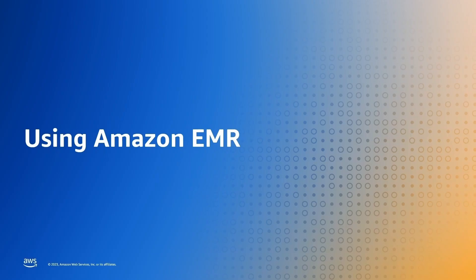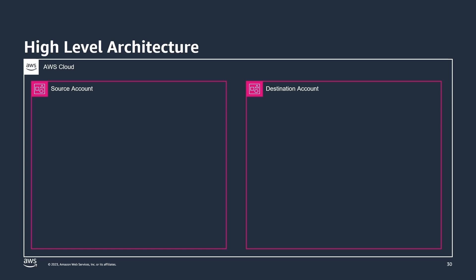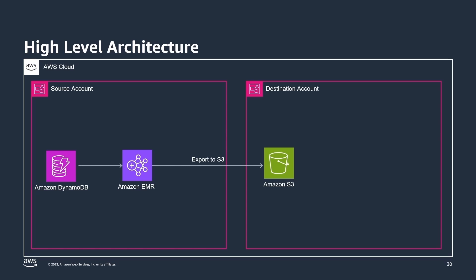You can also use Amazon EMR to migrate your DynamoDB tables between AWS accounts. This option comes in handy if you are already using EMR with Hive. This method can also work outside AWS Organizations and data can be imported into existing DynamoDB tables. First, make sure the S3 bucket in the destination account allows the source account for S3 put object operations. Then we use Amazon EMR running Hive in the source account to export the DynamoDB data to an S3 bucket in the destination account. Then we use Amazon EMR running Hive in the destination account to read the exported data from S3 and write it to a DynamoDB table in the destination account.